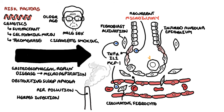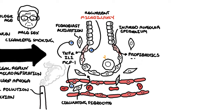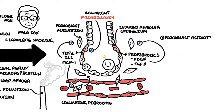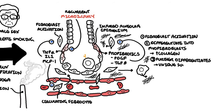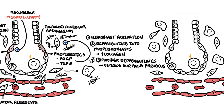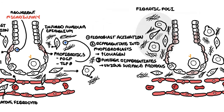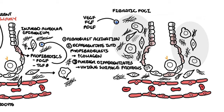On top of this, profibrotic chemicals such as platelet-derived growth factor and transforming growth factor beta are also secreted by alveolar cells, which stimulate fibroblasts to activate and proliferate, differentiate into myofibroblasts, and stimulate collagen synthesis. These fibroblasts undergo further differentiation, expressing unique surface proteins. Following induction of fibroblast activation, proliferation, and differentiation by epithelial injury, the fibroblasts and myofibroblasts organize into fibrotic foci. Growth factors targeting tyrosine kinase pathways are released continuously, promoting fibrotic foci formation and evolution into a fibrosed lung.